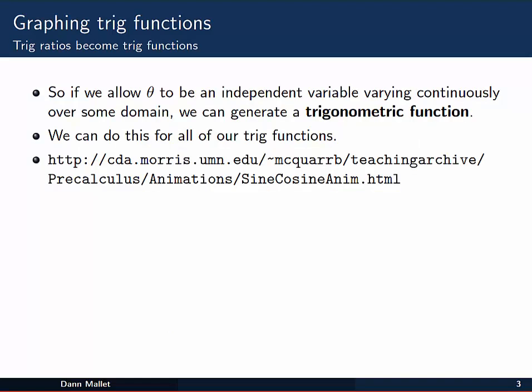It turns out that if you allow theta to be an independent variable and vary it continuously over some domain, it can generate a trigonometric function. We can do this for all of the trig functions. Here's a really useful link that you might want to follow, and we can check that out now.